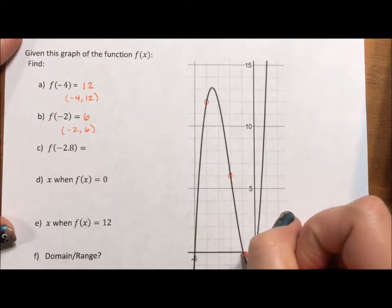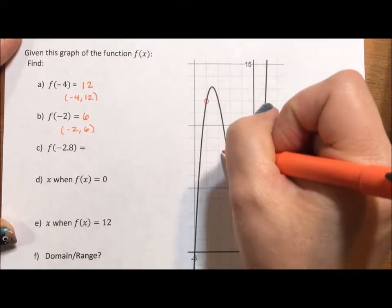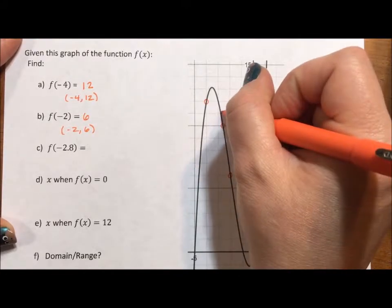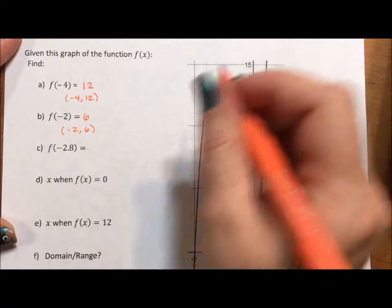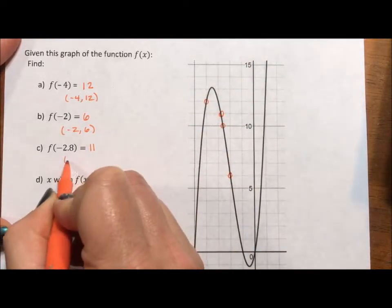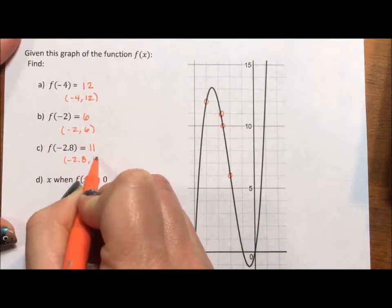Negative 2.8, 1, 2.8, that's about right there. If I follow it up, nope, I'd say this is better. And that's 11. So negative 2.8, 11 is a point on the graph.